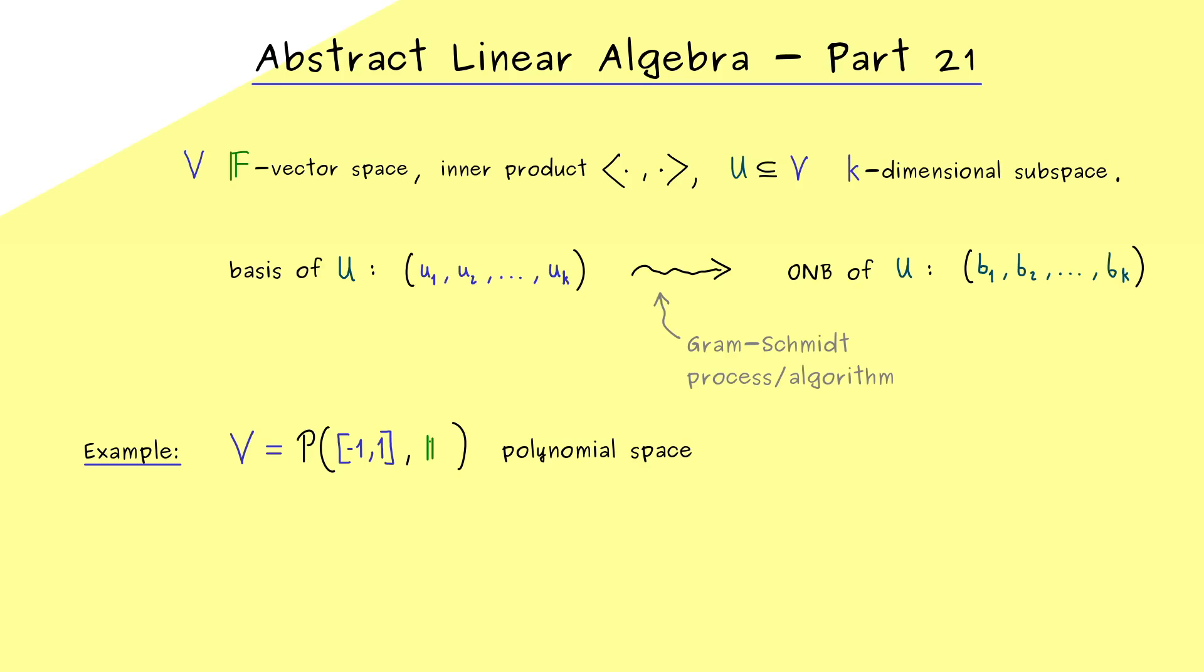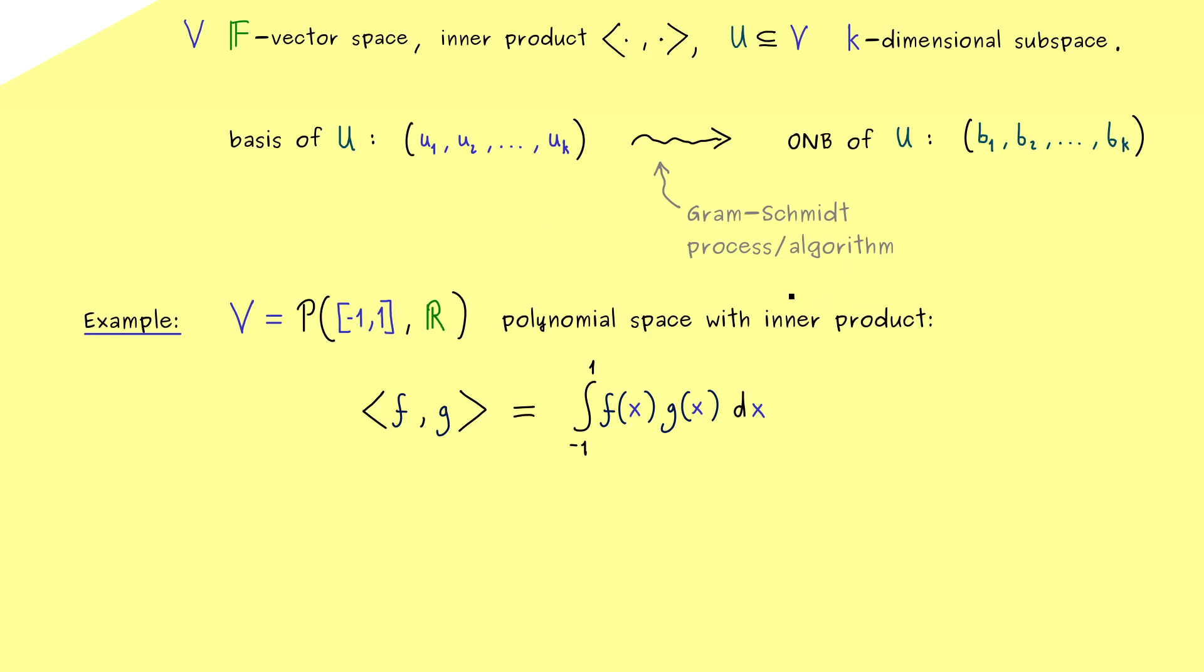And indeed I think this might be very helpful to understand the algorithm. And for this let's take the real vector space given by the polynomial space. So given by polynomials from the domain minus 1 to 1 into R. We take this one, because there we already know a nice inner product given by an integral. And for the real vector space it just means that we integrate the product of the two polynomials from minus 1 to 1. So this is a well defined inner product and now let's take a finite dimensional subspace U.